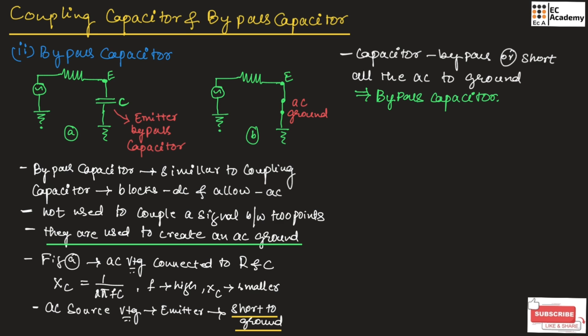For a good bypass capacitor, the condition is similar to that of a coupling capacitor, which means Xc should be less than 0.1 times R. When this condition is satisfied, we can replace figure A with figure B. This concludes the topic of coupling capacitors and bypass capacitors. Hope you have understood the topic. Thank you.